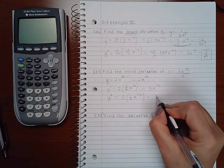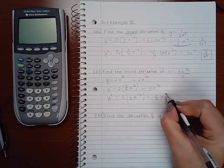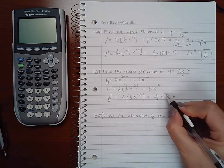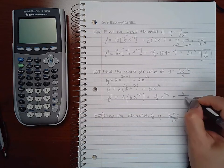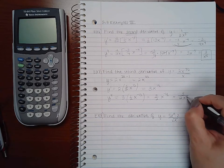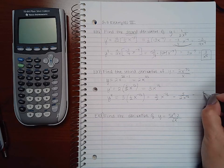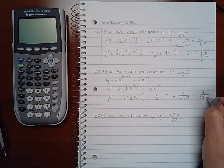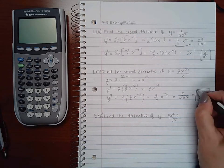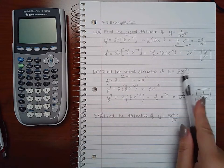And so this is 3 over 2 x to the negative 1 half. If I write that in the denominator because of the negative, and then the half is actually a square root. And so this is the second derivative of that expression.